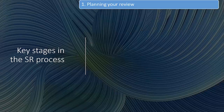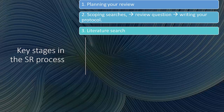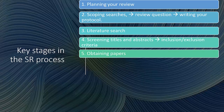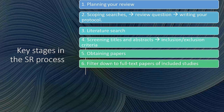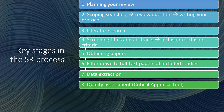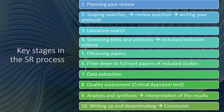The steps are: step one, planning your review; step two, scoping searches leading to a review question and then writing your protocol; step three, your literature search; step four, screening the titles and abstracts using your inclusion and exclusion criteria; step five, obtaining the papers of potential interest; step six, filtering down to full-text papers of included studies; step seven, data extraction; step eight, quality assessment — your critical appraisal using some sort of tool; step nine, analysis and synthesis leading to interpretation of results; and step ten, writing up and disseminating your information.